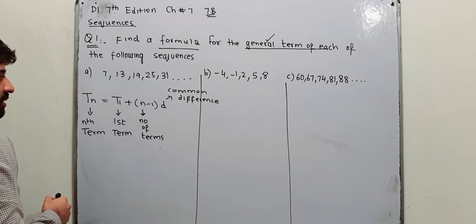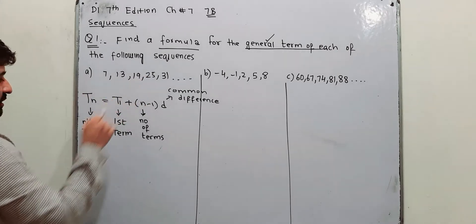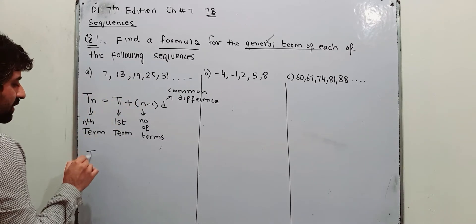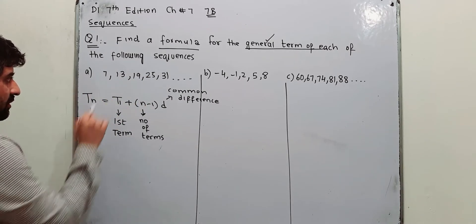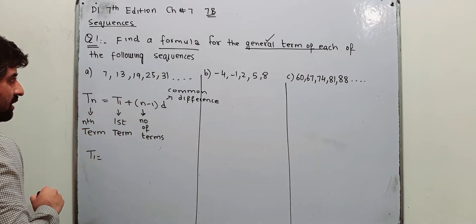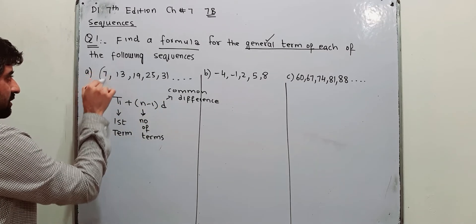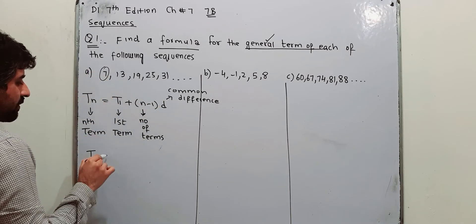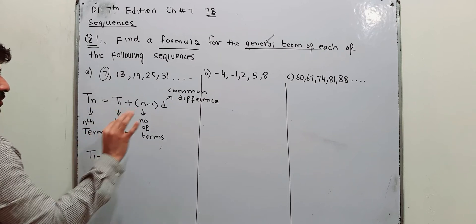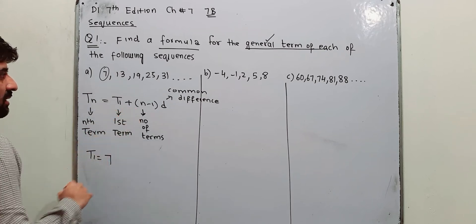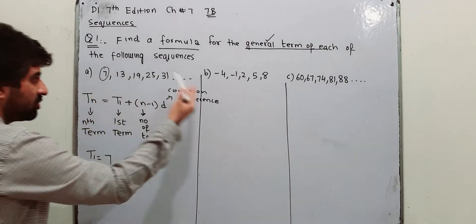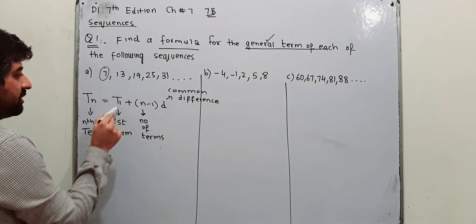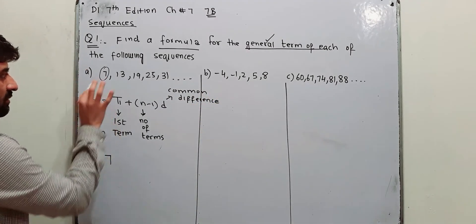First of all I am going to talk about T1 from this sequence. T1, as I have written here, is the first term of the given sequence, and the first term is 7. So T1 is 7 — quite simple. Every first term of each sequence is basically T1, term number 1.